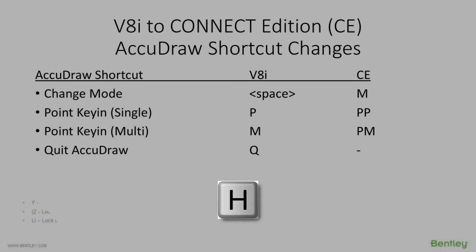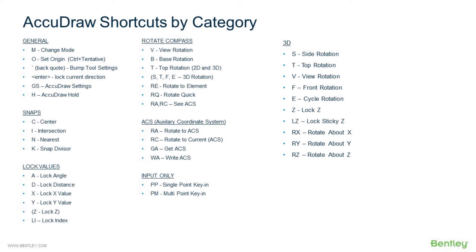If you want to hold AcuDraw, press H to temporarily hold it, then H again to re-enable it. This overview is organized by category — not going to read through it all, but it's here for your reference. Some shortcuts like R-A and R-C appear in multiple categories since they relate to both rotating the compass and the auxiliary coordinate system. It just gives you an idea of how to group the different AcuDraw shortcut categories.